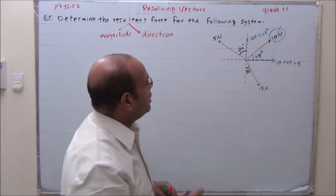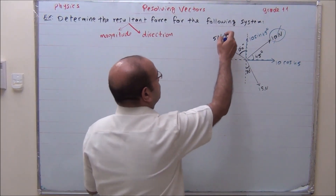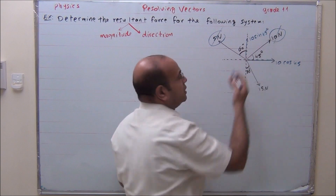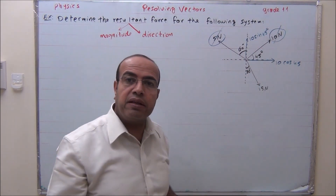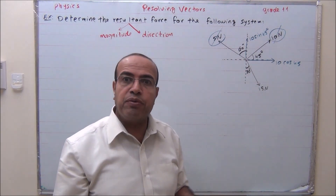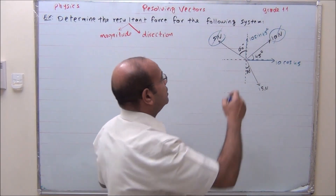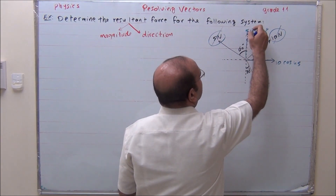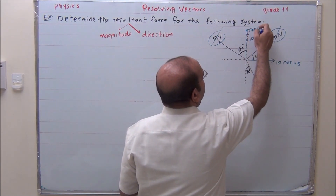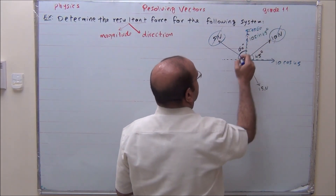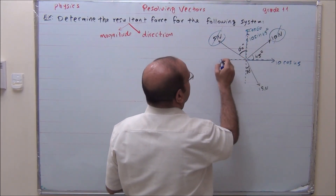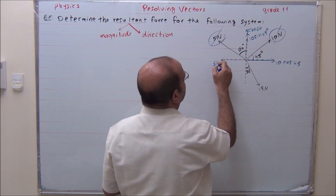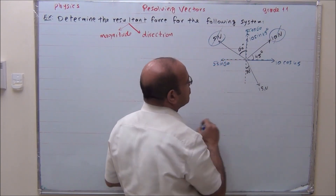We resolve this 5 Newton force into two components. The side near to the angle is cosine, away is sine. So in this direction it is 5 cosine 60, and in this direction it is 5 sine 60.